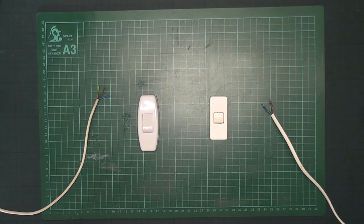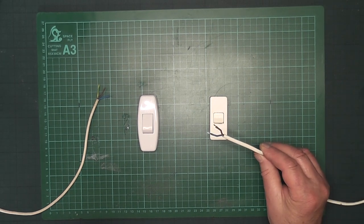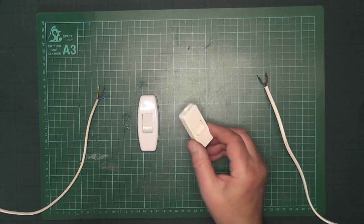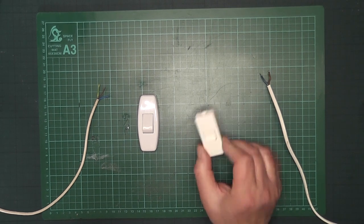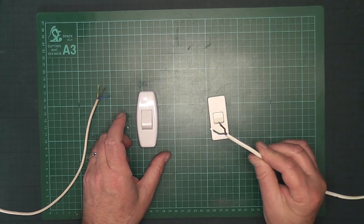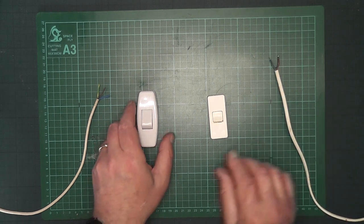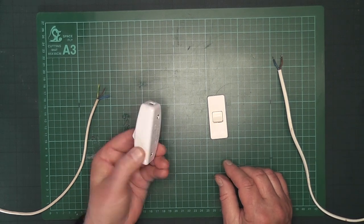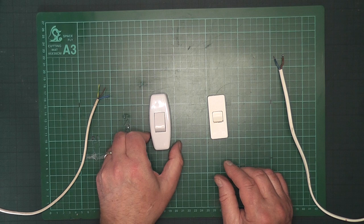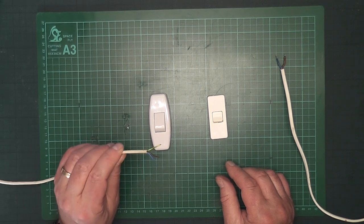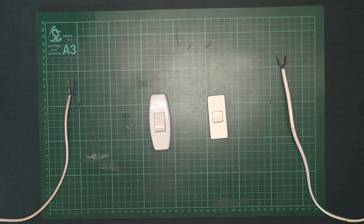Hello and welcome to another episode. Now we have an inline rocker switch for a lamp, and this one is two wire. We also have a three wire inline rocker switch for a lamp. Let's connect them up.